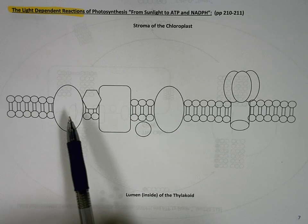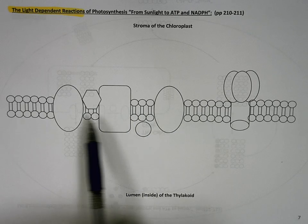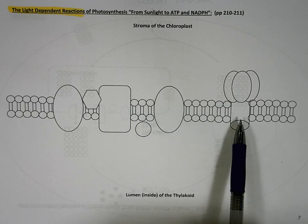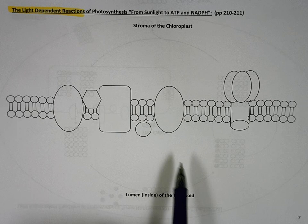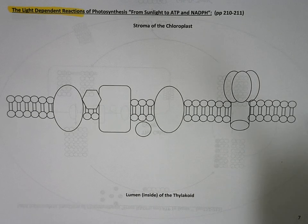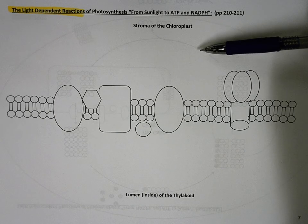This is an electron transport system embedded in that membrane. And this is ATP synthase. This would be the inside of the thylakoid here. And this would be the stroma of the chloroplast out here.